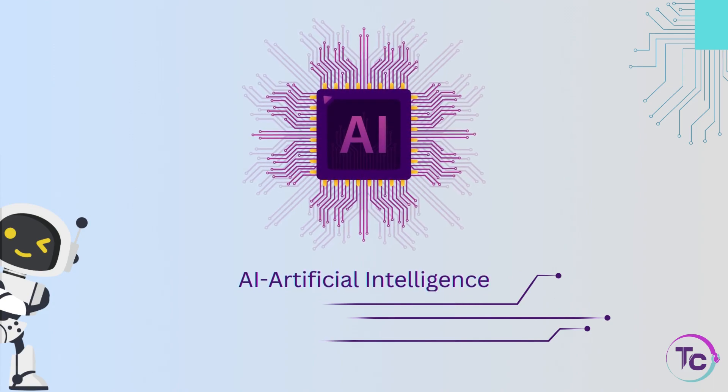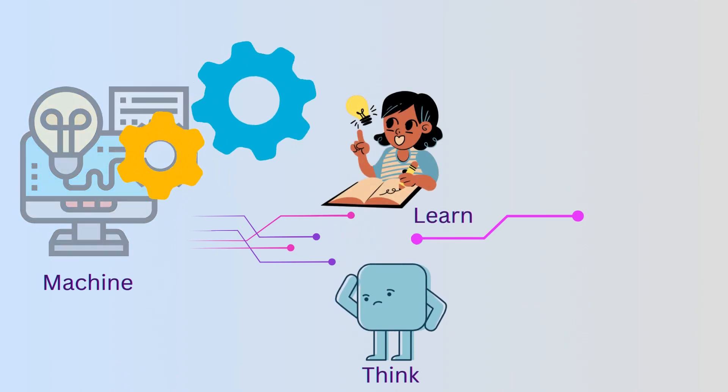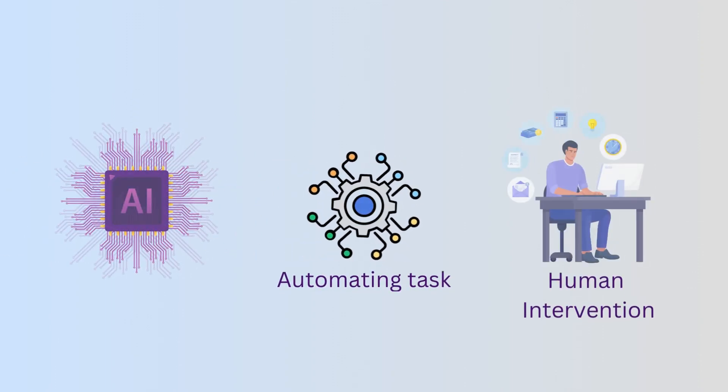Artificial intelligence, often abbreviated as AI, is the ability of a machine to think and learn like a human. One way to think about AI is as a way of automating tasks that would normally require human intervention.